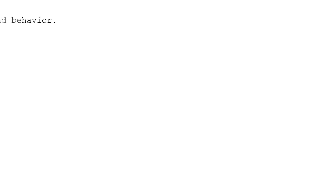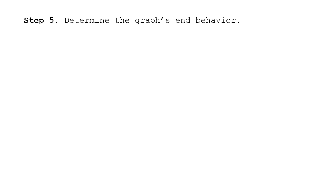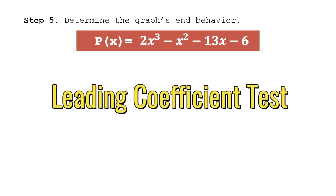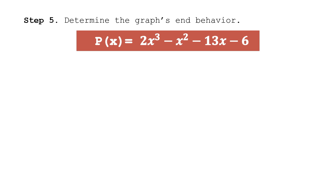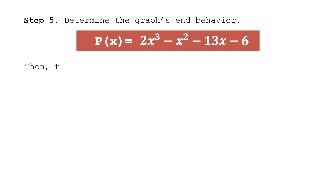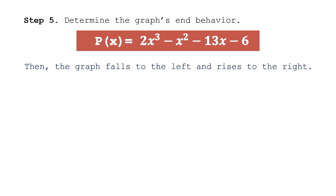We are now in step five: determine the graph's end behavior. We look at the leading coefficient and the degree. The value of n (degree) is 3, which is odd, and the leading coefficient is 2, which is greater than zero. According to the leading coefficient test, if n is odd and the leading coefficient is greater than zero, the graph falls to the left and rises to the right.